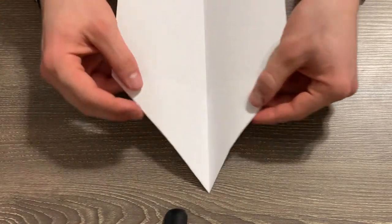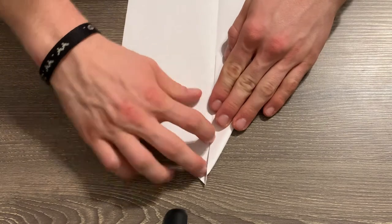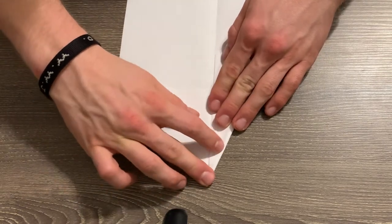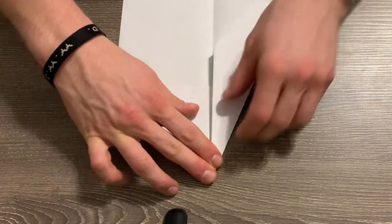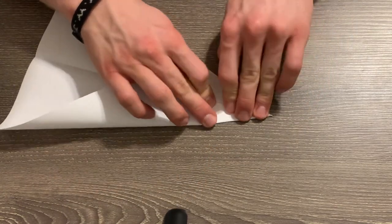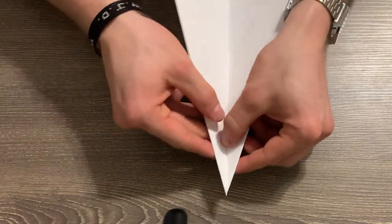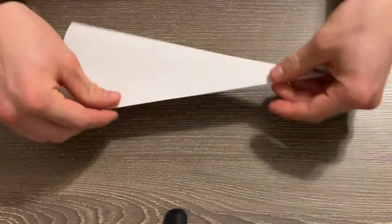Now we're going to do that same thing one more time by folding them in half again towards that center line. Get some nice crisp folds here. And now, if we fold it back in half again, we should be ready to fold our wings down.